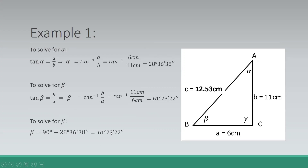The two angles in a right triangle are complementary angles, so when you add them up they should equal 90 degrees. If you already have the value of either of these two angles, you can just subtract it from 90 to get the other angle. That's how you solve for right triangles — you find the measures of all sides and the measures of these two angles.